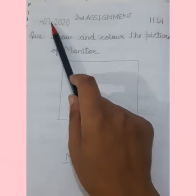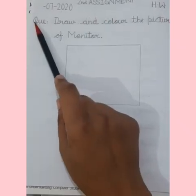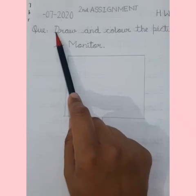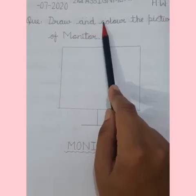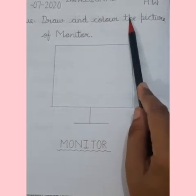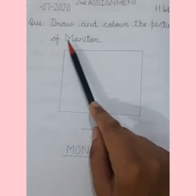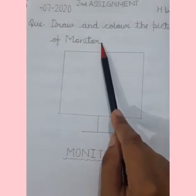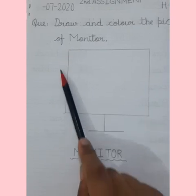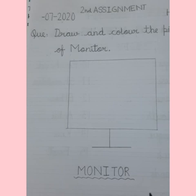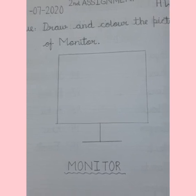Now come to the next page. Write the date, then write: Second Assignment. H.W. Come to the next line and write Q.U.E.: Draw and color the picture of monitor. You have to draw the picture of the monitor and color it. Use crayon colors and avoid black color.